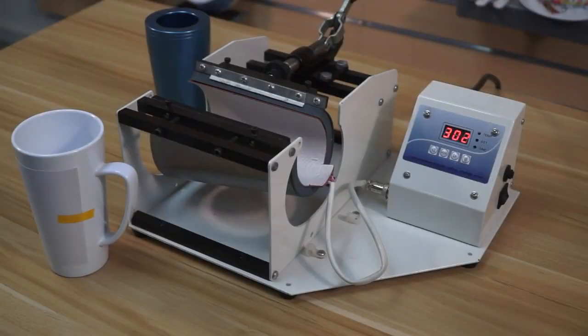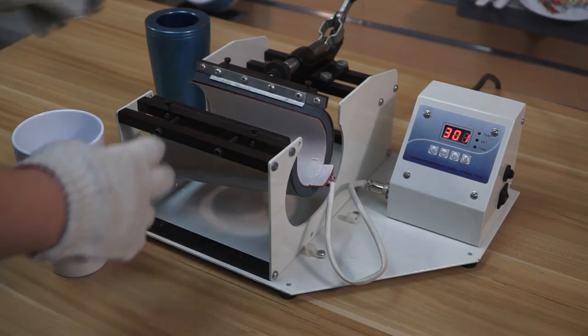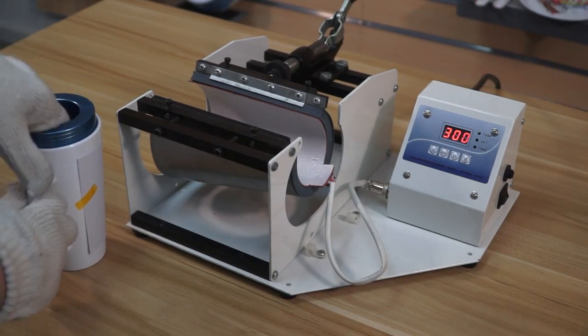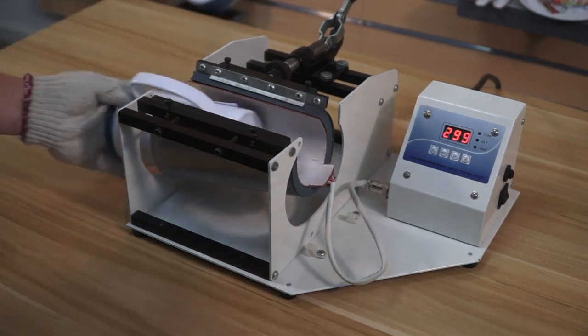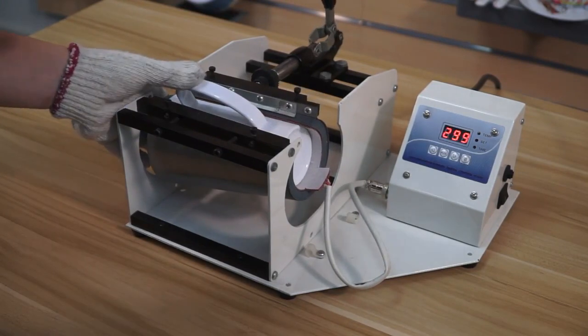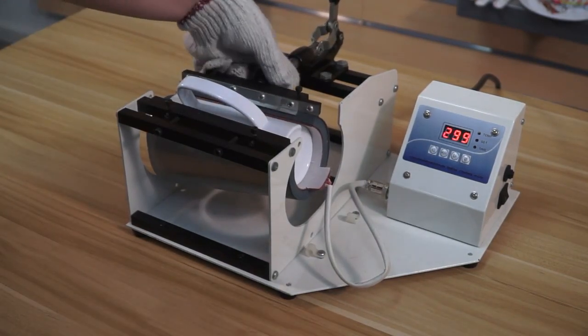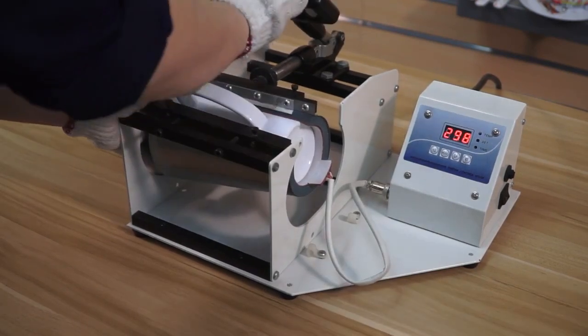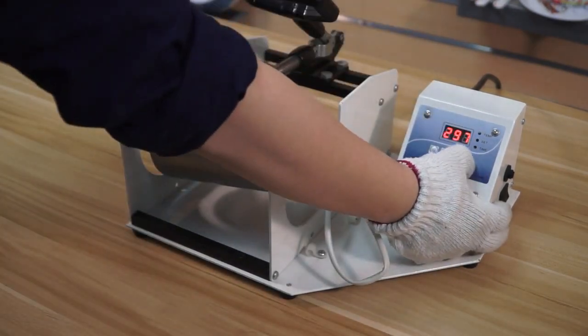Okay, now the machine is beeping. We can move on to the next step. Put the insert tool inside the mug and then insert the mug in the wrap here. Remember to adjust the pressure to be moderate, then press the start button.